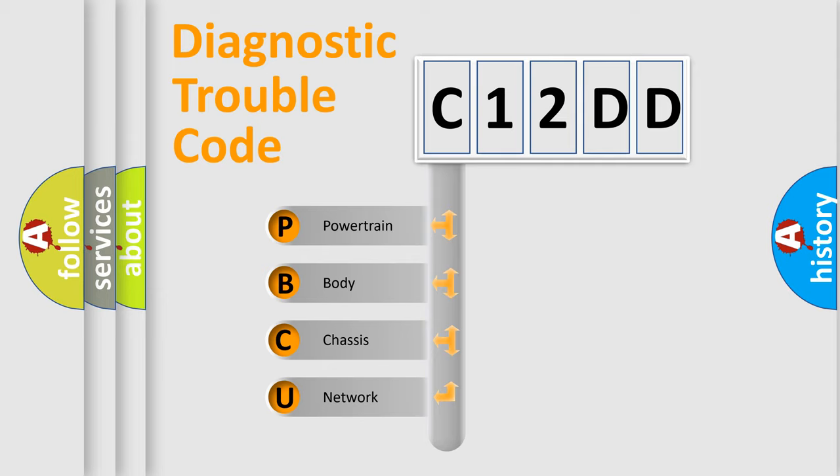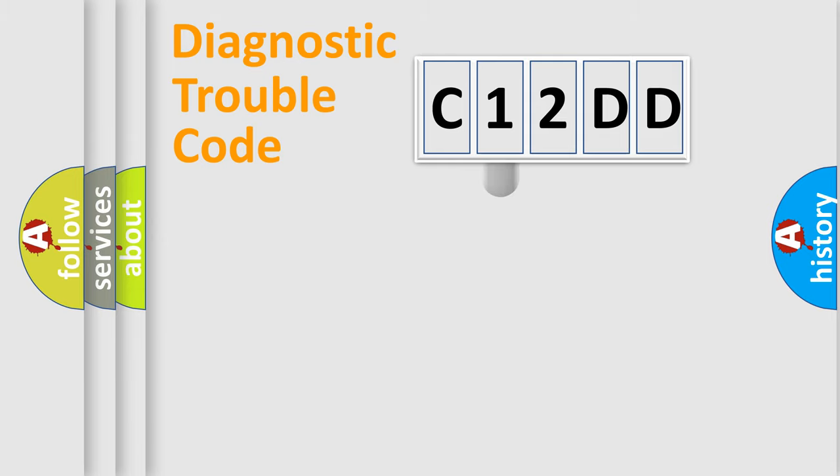We divide the electric system of automobile into four basic units: Powertrain, Body, Chassis, and Network. This distribution is defined in the first character code.